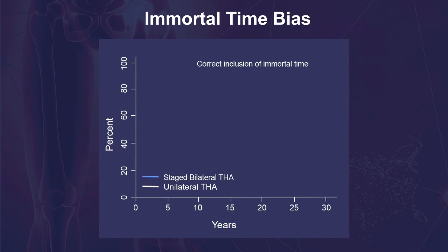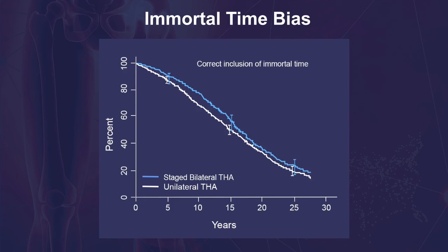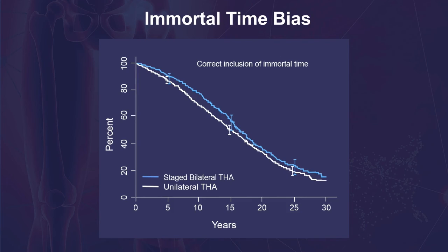When the follow-up time is correctly allocated in this manner, the results change dramatically. The resulting survival rates are much closer: the 15-year survival rate has increased to 50% among the unilateral patients and has decreased to 56% among patients with bilateral surgeries. Performing the analysis correctly has effectively removed the immortal time bias and resulted in more accurate estimates of the true survival rate.